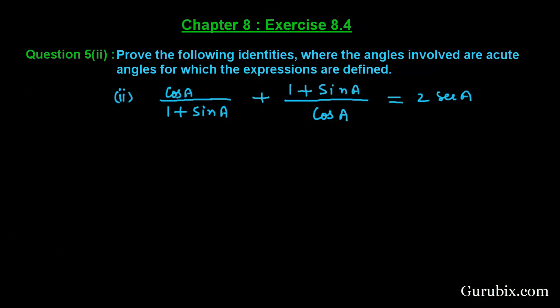Welcome friends. Let us solve the second part of question number 5 of exercise 8.4 of chapter 8. The question says: prove the following identity where the angles involved are acute angles for which the expressions are defined.